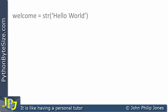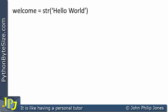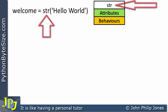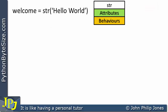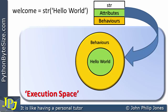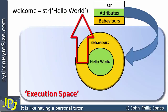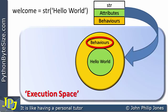Let's map the following Python program statement onto the execution space. When this statement executes, we're going to be using the string class, which has the name str. We will produce an instance of this class — an object in the execution space. At the center of the object we can see one of the attributes, the instance attribute, is 'Hello World', which has clearly been derived from the program statement. Surrounding the attributes, we have the behaviors. We also need to ask: what is the name of this object? We will name it welcome.